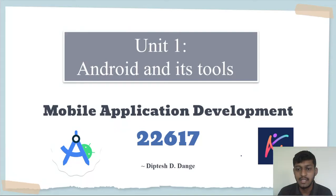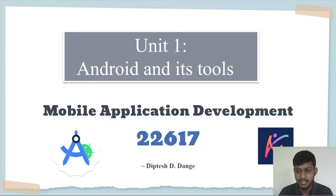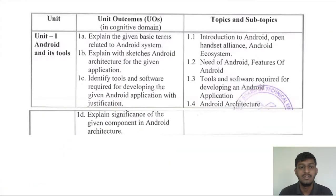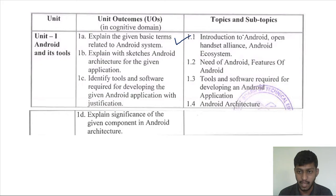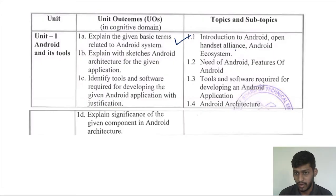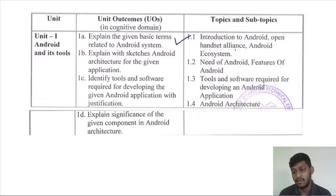Hello friends, welcome to this video. In this video we are going to see Unit Number One: Android and its Tools of Mobile Application Development, subject code 22617. We will cover point 1.1 — Introduction to Android, Open Handset Alliance, and Android Ecosystem. There are three sub-points: introduction to Android, what is Open Handset Alliance, and Android ecosystem.